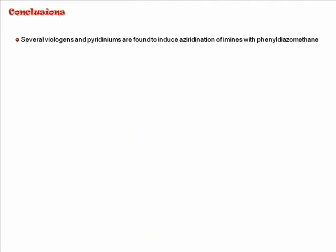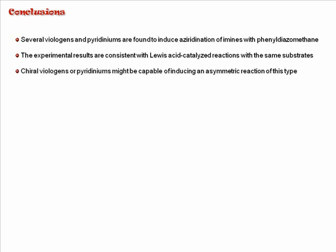At the current stage of this ongoing project of using viologens as catalysts in organic synthesis, we may summarize the results I have just talked about as the following several points. First of all, a series of viologens and pyridiniums were found to be able to promote formation of aziridines in high yields and selectivities by reacting imines with phenyl diazo methane. And based on the experiments, including the catalyst and imine screen, and the stereochemistry of this aziridiniation reaction, we can see that the results are consistent with Lewis acid-catalyzed reactions with the same substrates. This led us to envision that, by using chiral viologens or pyridiniums, this reaction may be rendered a novel method of asymmetric aziridine synthesis.